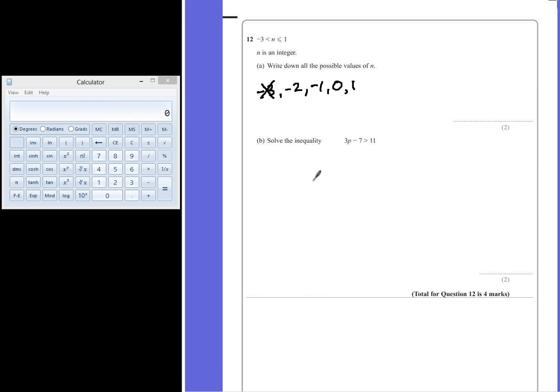For Part B, solve the inequality 3p minus 7 is greater than 11. This can be solved exactly the same way that a linear equation can if this was an equal sign. We keep everything balanced.